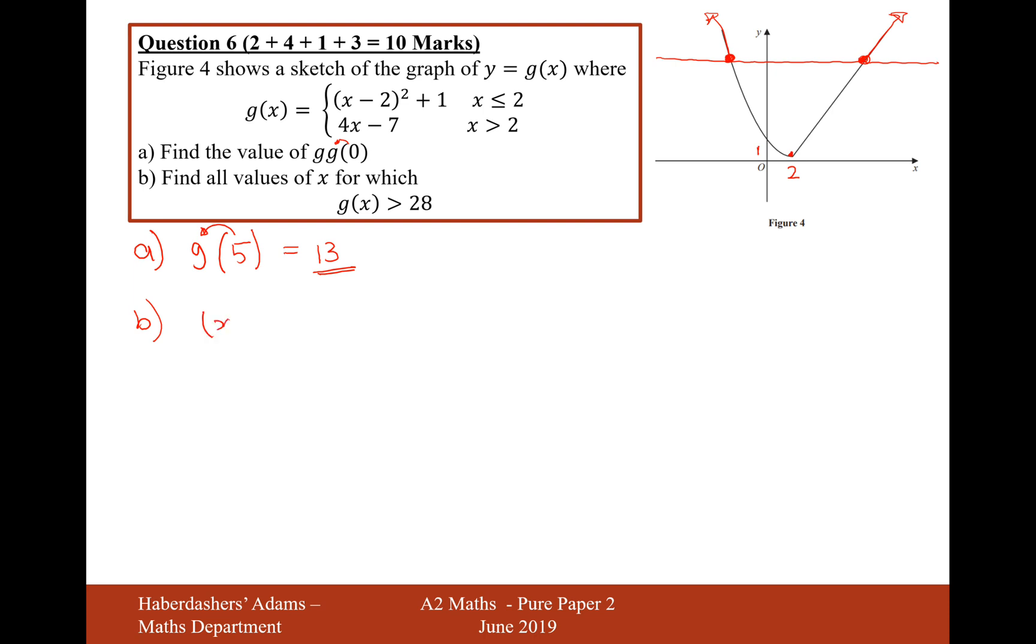It's going to be x minus 2 squared plus 1 equals 28. Take away 1 from both sides, I'll get x minus 2 squared equals 27. Now square root both sides, and it's going to be x minus 2 equals plus or minus root 27. And then add the 2 to the other side, and I'm going to get 2 plus or minus. I could simplify root 27 to 3 root 3.